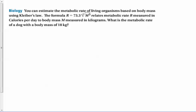Here is a word problem using biology. You can estimate the metabolic rate of a living organism based on body mass using Kleiber's law. The formula R equals 73.3 times the 4th root of m cubed relates the metabolic rate R measured in calories per day to body mass M measured in kilograms. What is the metabolic rate of a dog with a body mass of 18 kilograms? So there's a lot going on here. When you look at this, this R formula, that's the most important thing. The R here measures the calories per day to a body's mass measured in kilograms.